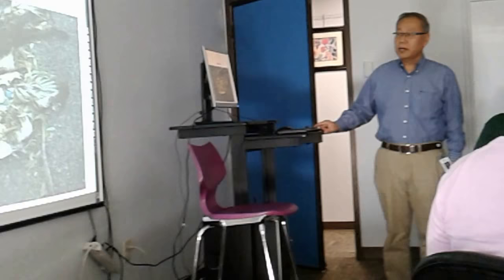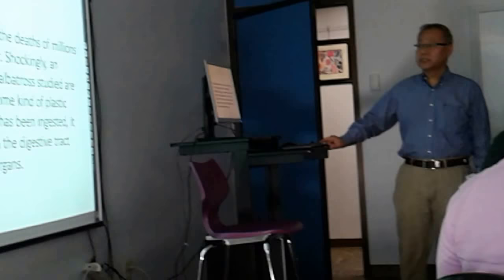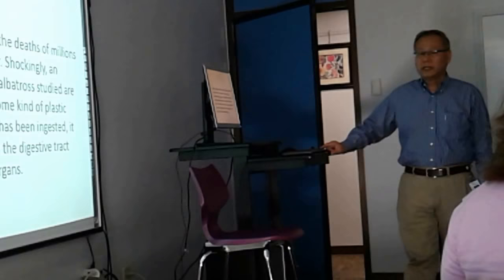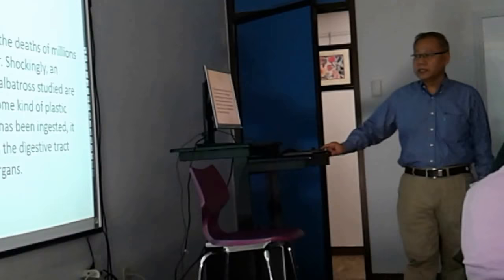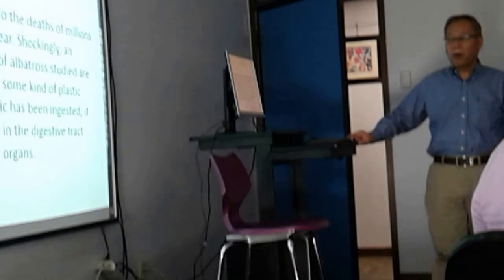Another is seabirds. You see the plastic debris inside the stomach of a seabird. Plastic pollution leads to the death of millions of marine birds each year. It's very shocking: an estimated 98% of albatross species studied were found having ingested some kind of plastic debris. Once plastic has been ingested, it could pop internal organs and obstruct the breathing tube.